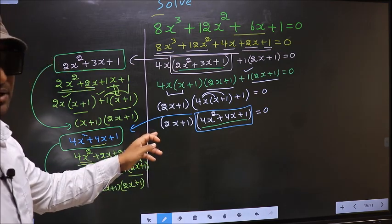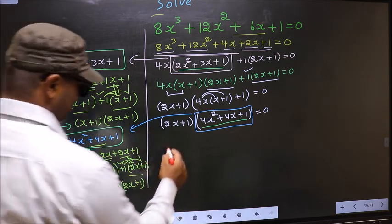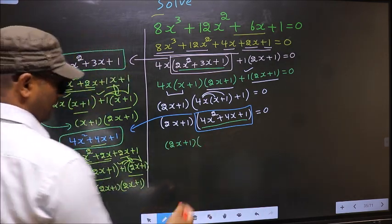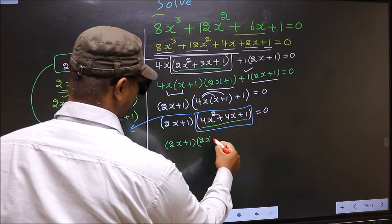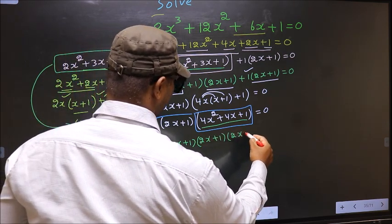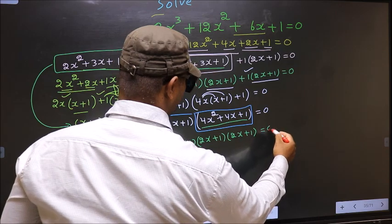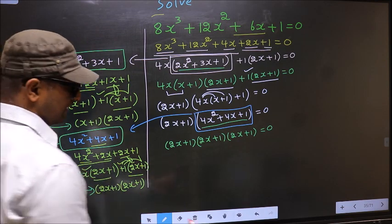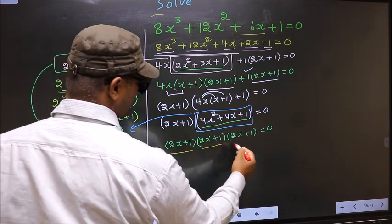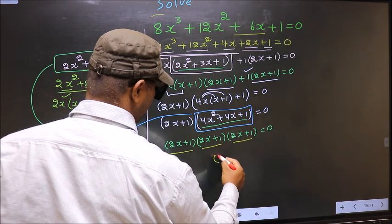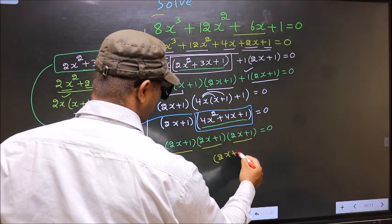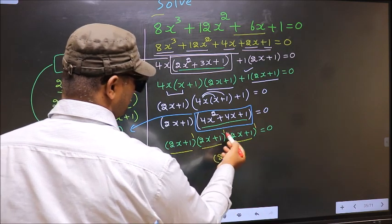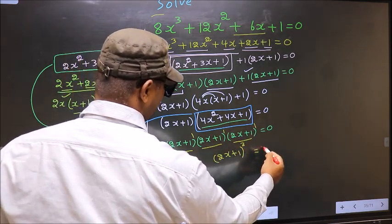In place of the quadratic 4x² + 4x + 1, we write (2x + 1)(2x + 1). So the equation changes to (2x + 1)(2x + 1)(2x + 1) = 0. Each factor is (2x + 1) — same base — so combining: (2x + 1)³ = 0. We add the powers: 1 + 1 + 1 = 3.